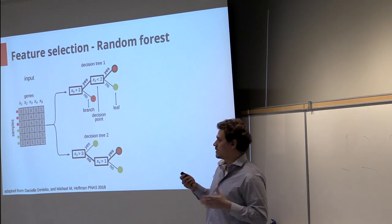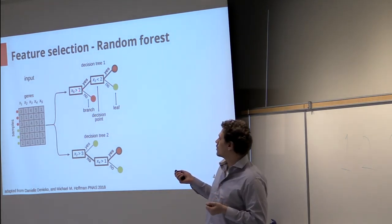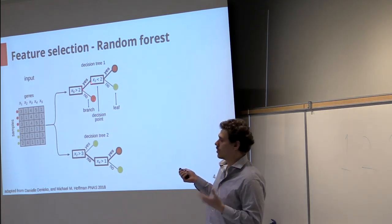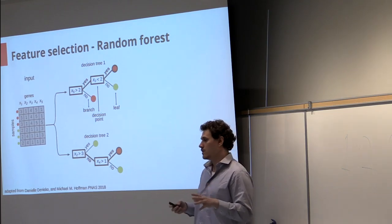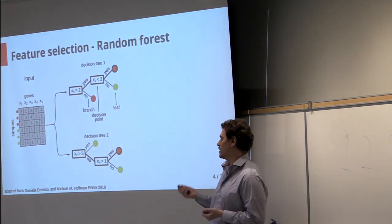After we select the gene, we split the input dataset into two groups. One group goes in one branch, another group goes to another branch, and we repeat the same process until all the samples in the branch are from the same lineage.